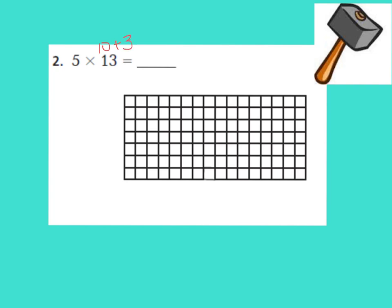We are going to say that this 1 is worth 10, and the 3 is worth 3 ones. Now we're going to multiply our 5 times our 10, and 5 times our 3. Let's go ahead and get our array ready.